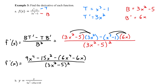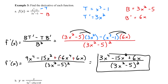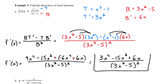Now I'll distribute the minus sign, changing it to a plus and flipping the signs inside the parentheses. Then combining like terms — 9x to the 4th and negative 6x to the 4th — I get 3x to the 4th minus 15x squared plus 6x, all divided by 3x squared minus 5, quantity squared. You could factor a 3x from the numerator, but I'll just leave the answer as is.